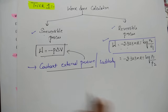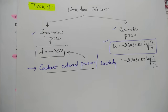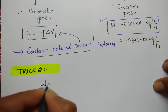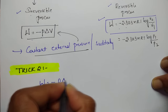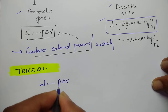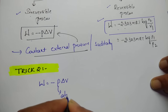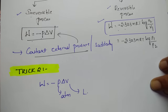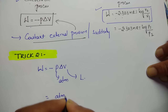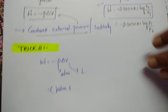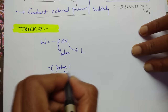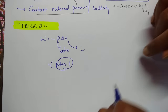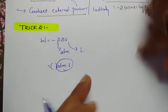Let us see trick number 2. Whenever you use the formula W = -PΔV, pressure is in ATM and volume is in liters, so you get ATM·liter as the unit in your answer. But in options, ATM·liter won't be given — if Joules is given, how do you do the conversion?